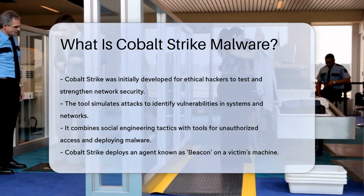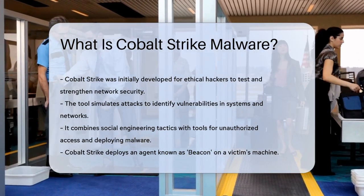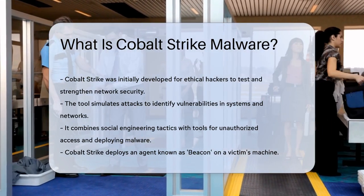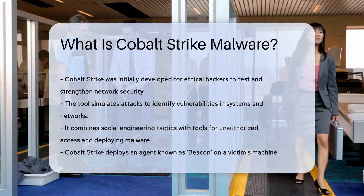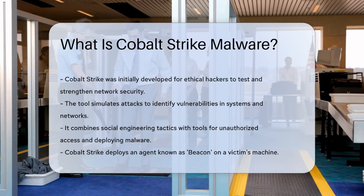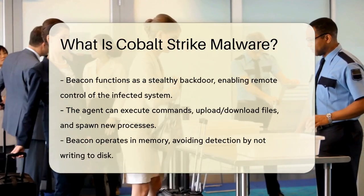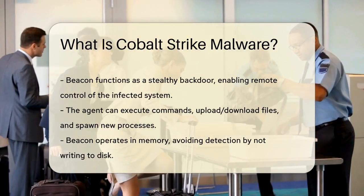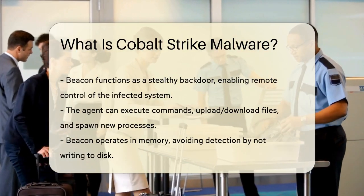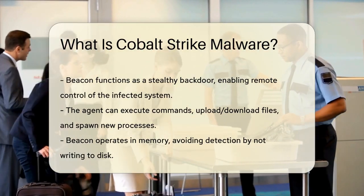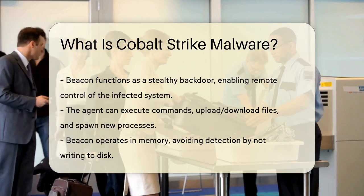Cobalt Strike allows attackers to deploy an agent called Beacon on a victim's machine. This Beacon is like a stealthy backdoor that lets the attacker control the system remotely. It can execute commands, upload and download files, and even spawn new processes. What makes Beacon particularly dangerous is its ability to remain in memory without touching the disk, making it hard to detect.